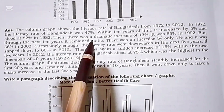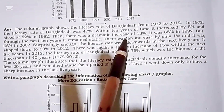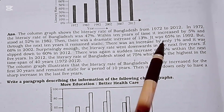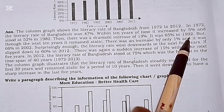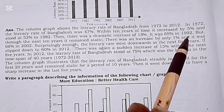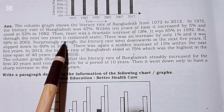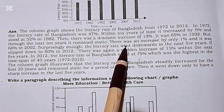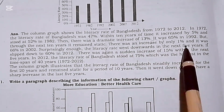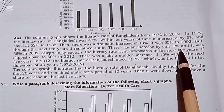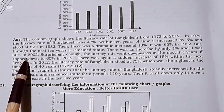Then there was a dramatic increase of 30%, reaching 65% in 1992. But through the next 10 years it remained almost static — there was an increase of only 1%, standing at 66% in 2002.